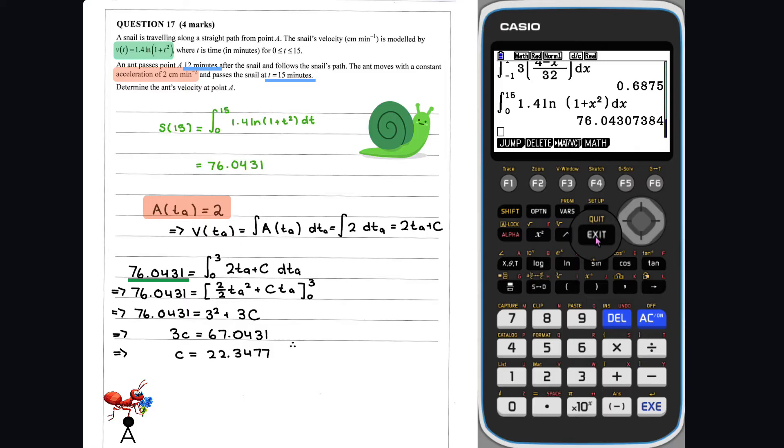Now we have C. So the ant's velocity can be given by the ant's velocity at point A. The ant's velocity at point A is equivalent to finding the velocity at t equals 0. Thus, the ant's velocity at point A is 22.3477 centimeters per minute.